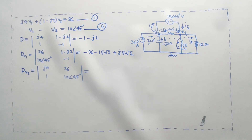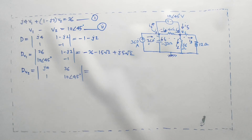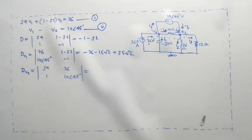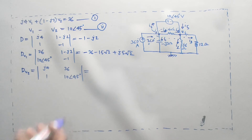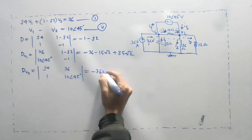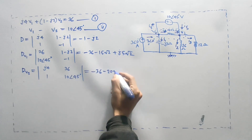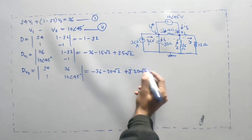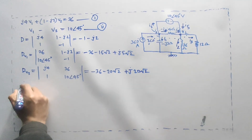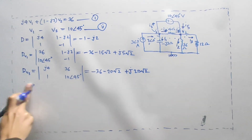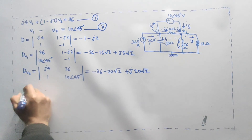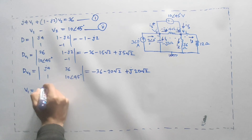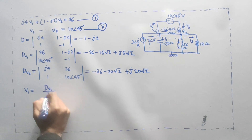10 angle 45 degrees times 4j minus 36. V1 equal to dV1 divided by d.